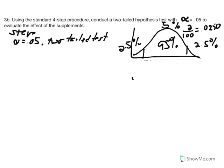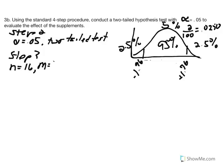So our critical z is equal to negative 1.96 or positive 1.96. Step 3 says calculate your statistics. We have n equals 16, sample average m equals 54, population average mu equals 50, and population standard deviation equals 12. We're trying to explain the difference between 54 and 50 — either due to chance (sampling error) or due to the herbal remedy.